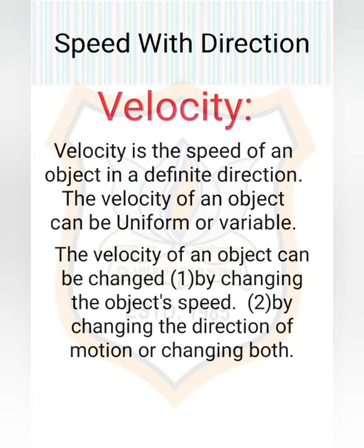Hello students, let us continue chapter 8 in science — that is motion. Today we are going to discuss speed with direction, which means velocity, and acceleration, along with a few examples. The rate of motion of an object can be more precisely described if we specify its direction of motion along with its speed. The quantity that specifies both these aspects is known as velocity. Velocity is a vector quantity.